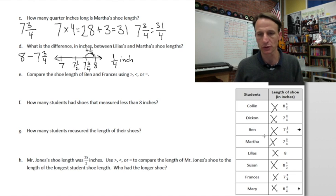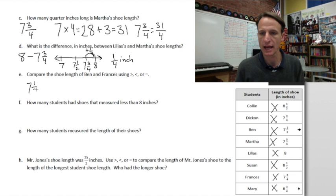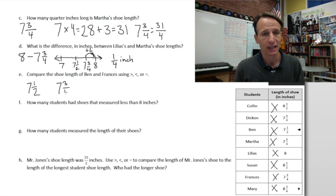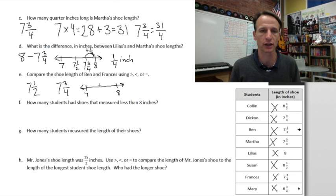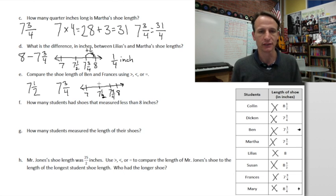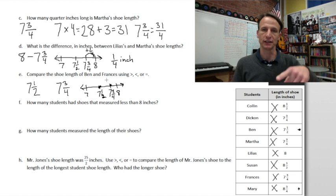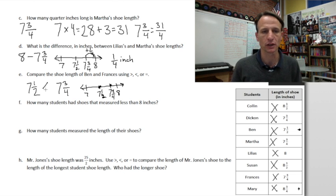Part E: compare the shoe lengths of Ben and Francis using greater than, less than, or equal to. Ben is seven and a half and Francis is seven and three quarters. Drawing a simple number line, you can see seven and one half is less than seven and three quarters.